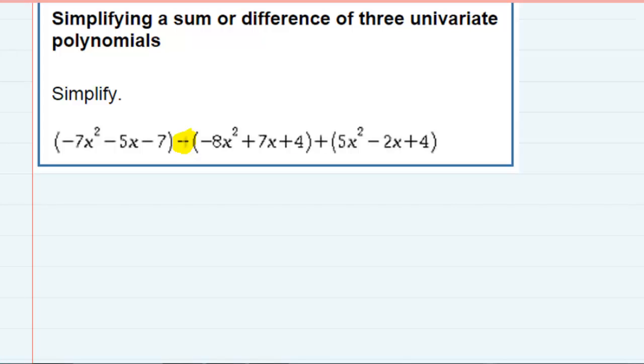So we can fix that subtraction. I'm going to rewrite the problem. The first term here is no problem. Negative seven x squared minus five x minus seven.